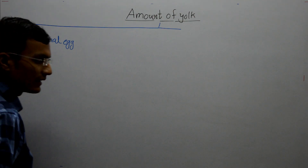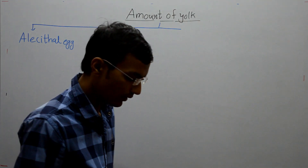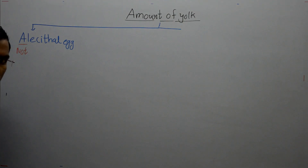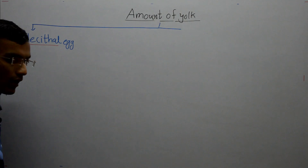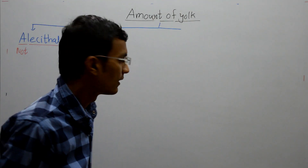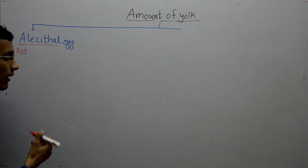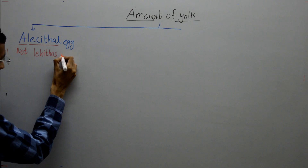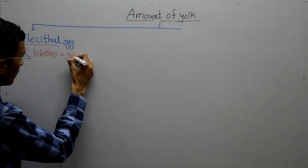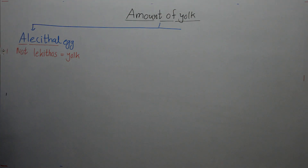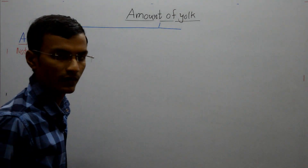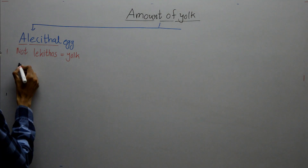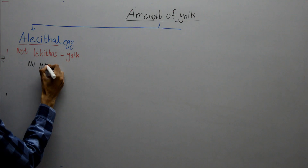The word 'alecithal' is made up of two different words: 'a' means 'no', and 'lecithal' comes from the Greek word 'lekithos', which means 'yolk'. So alecithal means the egg which contains no yolk — it is known as an alecithal egg.